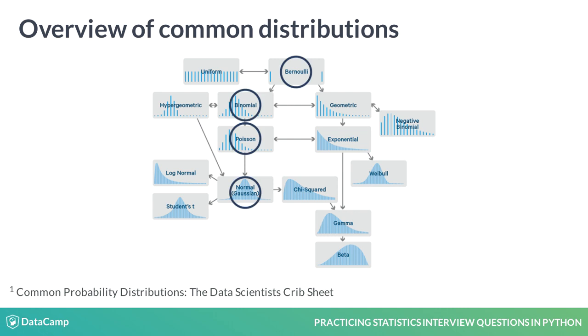These include Binomial, Bernoulli, Normal, and Poisson. We'll use the RVS command in SciPy to simulate all of these distributions before you visualize them using Matplotlib.